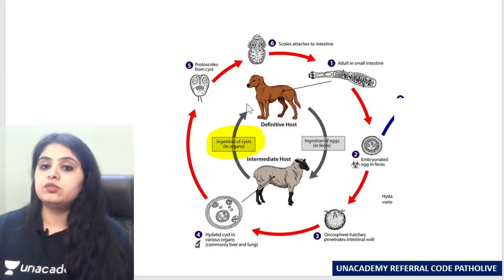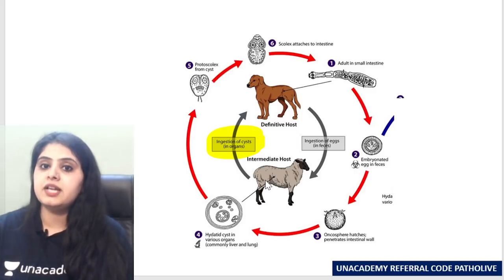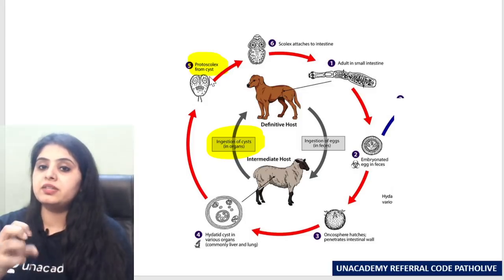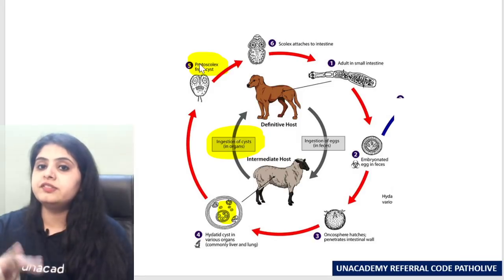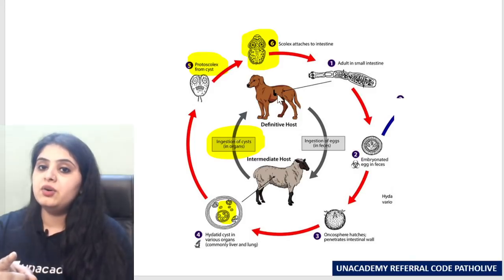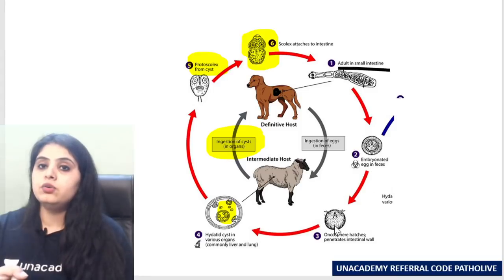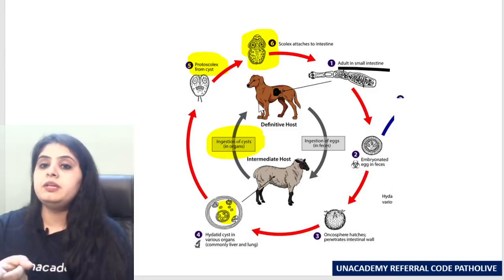These cysts are ingested by the dog when it eats the carcasses of sheep or cattle. From the cyst, the protoscolices come out, the scolex attaches to the intestine of the dog, and the adult worm forms again. Then the dog passes feces again, the sheep eats the feces, the oncosphere comes out, the hydatid cyst forms, and the cyst is eaten again by the dog.